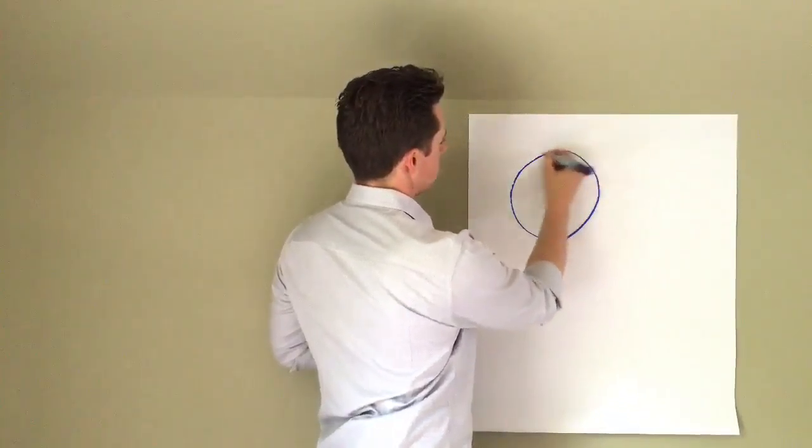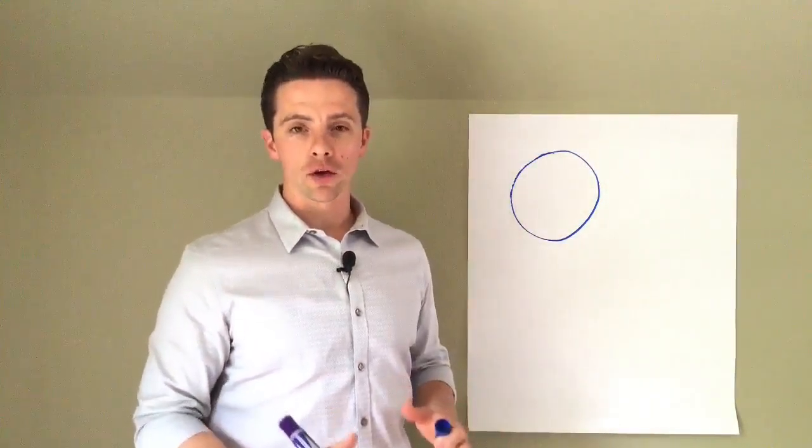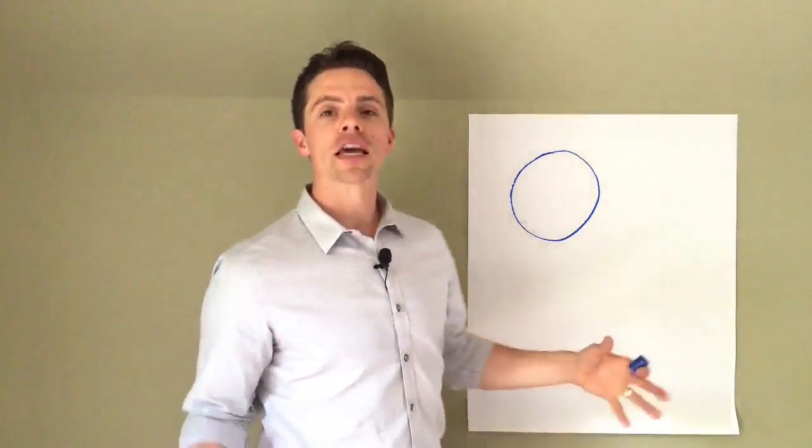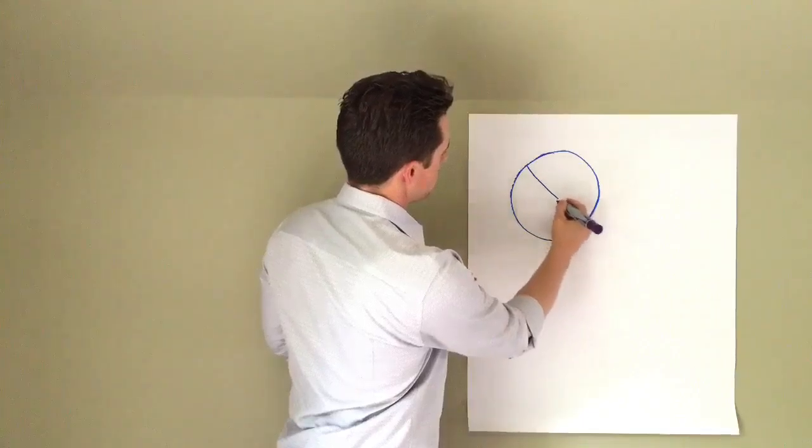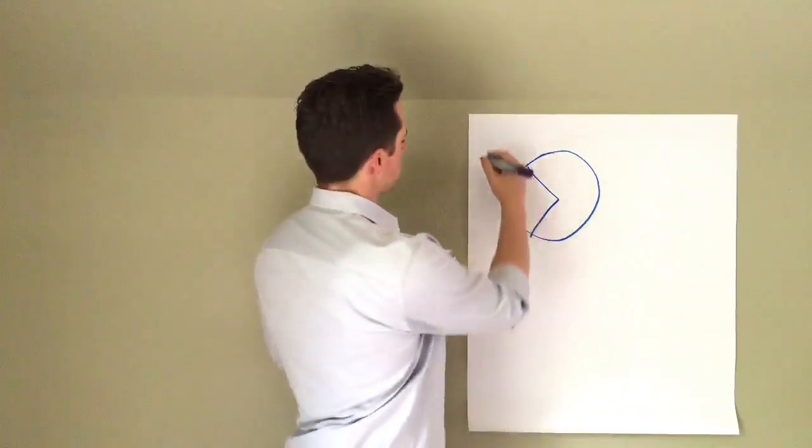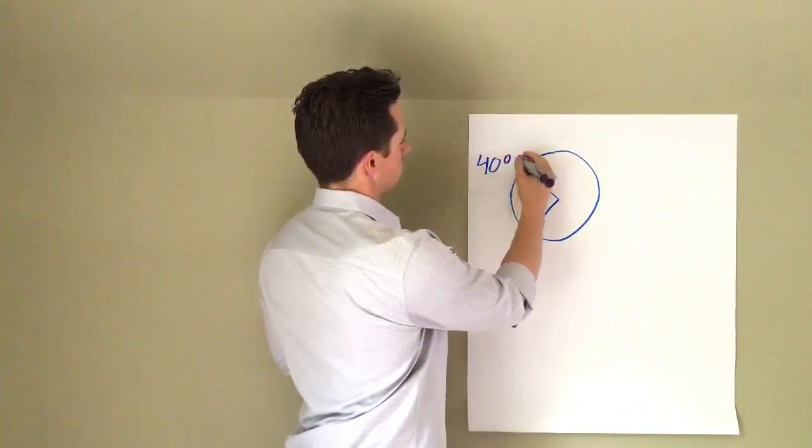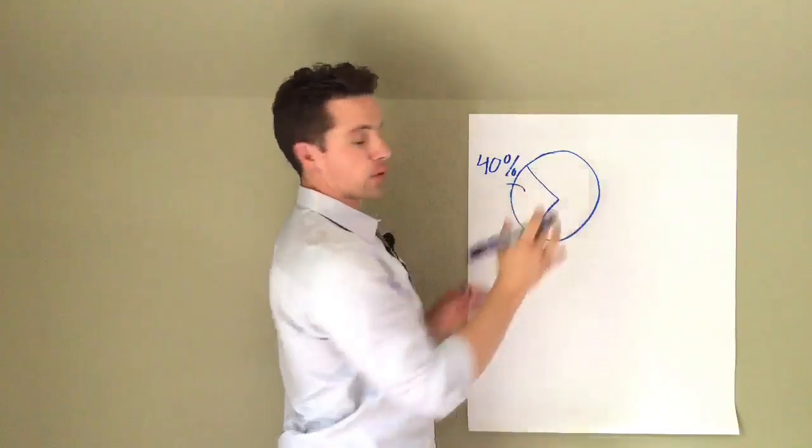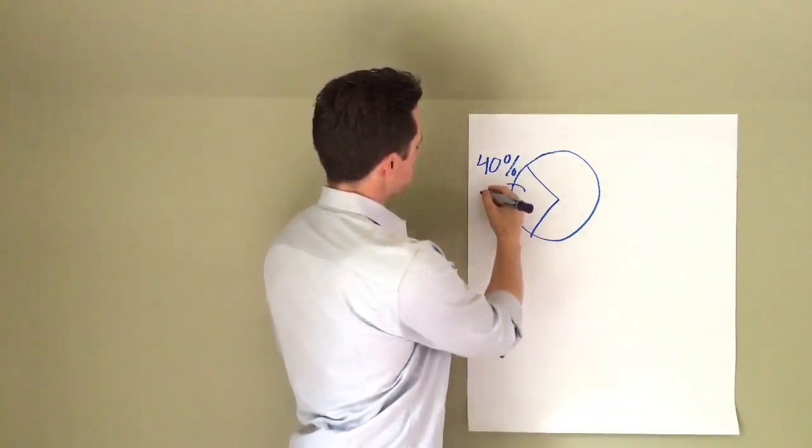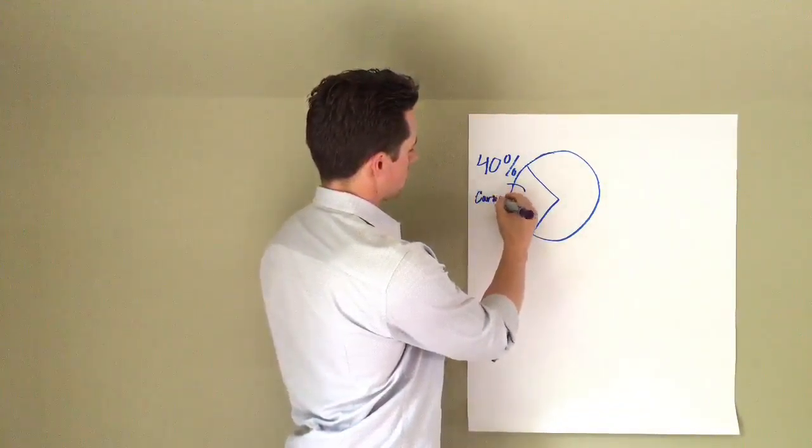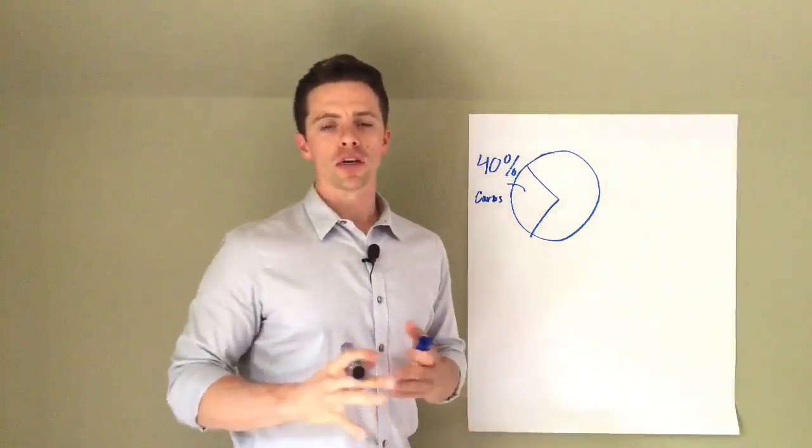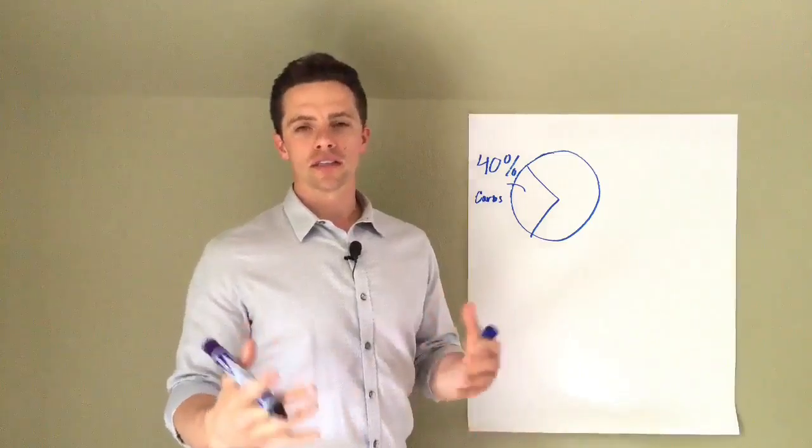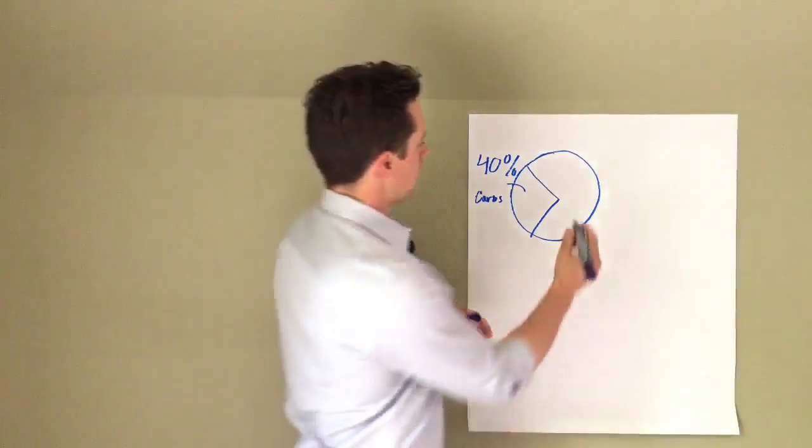If you're going to look at your total daily caloric intake, so imagine that was all the calories you ate in the day, I would recommend you to eat 40% of those, 40% close, from your carbs, healthy carbs. That'd be things like fruits, veggies, whole grains, quinoa, oatmeal, rice, things like that. 40%.